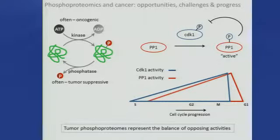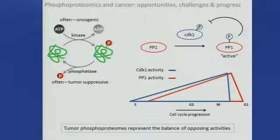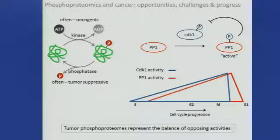The key conceptual message is that tumor phosphoproteomes really represent the balance of opposing activities. Kinases are often but not always oncogenic, and phosphatases are often but not always tumor suppressive. It was always surprising to me that people would pull kinases out of tumors or cell lysates and assay their activity in vitro, when in fact the occupancy of phosphorylation sites in the tumor is the most important feature of what that kinase is actually doing. Loss of many phosphatases alone is sufficient to induce cancer.